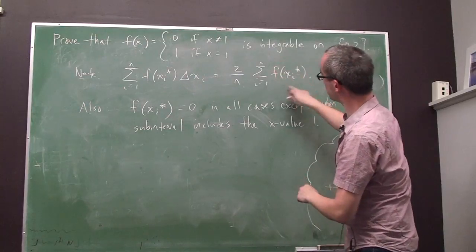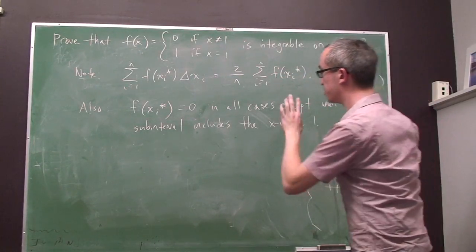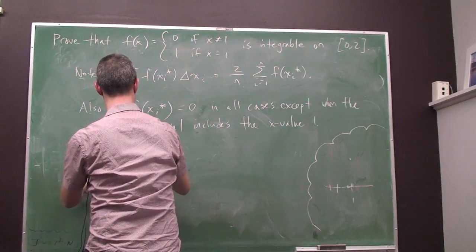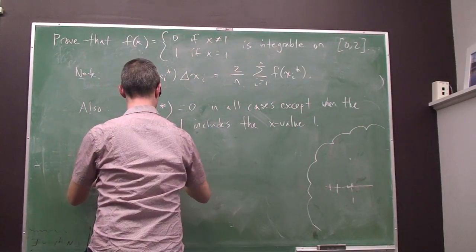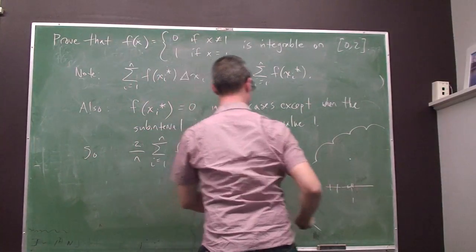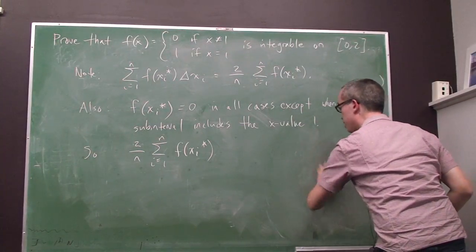Okay, so this is almost always 0. So, from this observation, we can conclude that this sum, well, what is that equal to? It might be equal to 0.